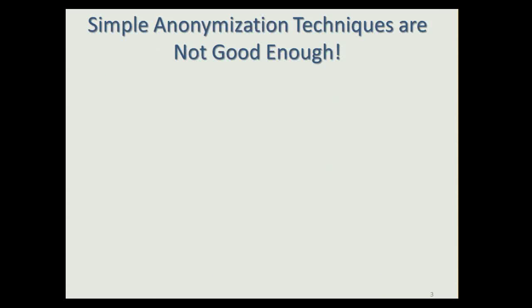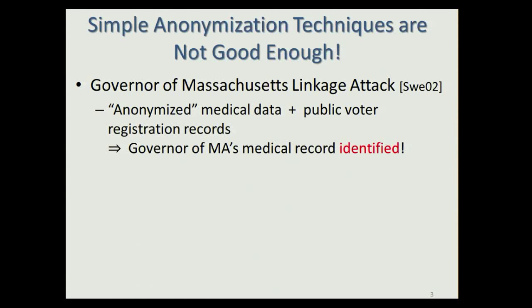It turns out that simple anonymization techniques are not good enough. In the past, a medical insurance company released supposedly anonymized medical data. However, by combining this medical data with public voter registration records, one can actually identify some of the medical records, such as the governor of Massachusetts.